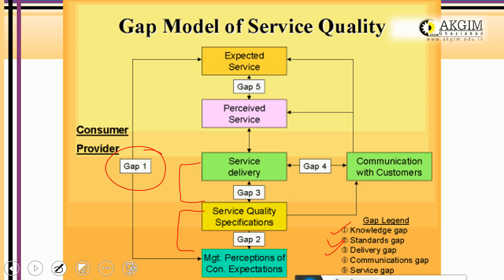Gap 3 is the Delivery Gap, which happens between the actual service delivery and the service design or service quality specification. If the way the service design department designed the service differs from how the people who deliver the service actually perform it, that difference is the Delivery Gap.